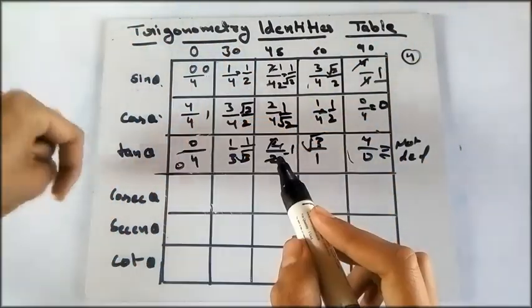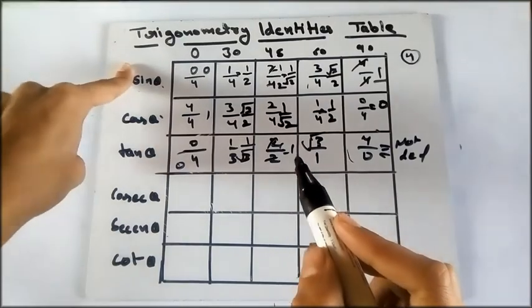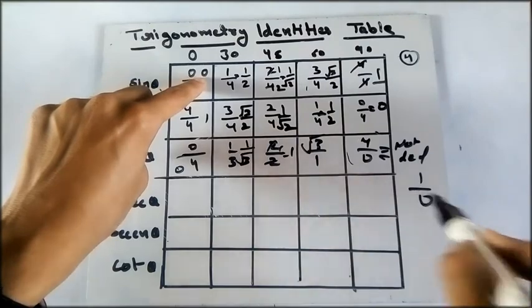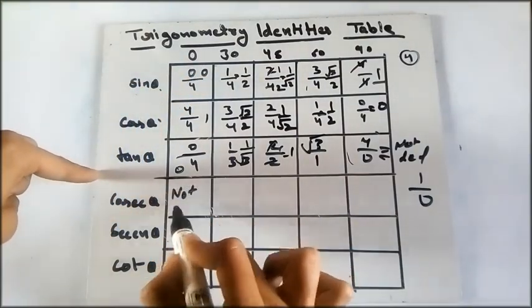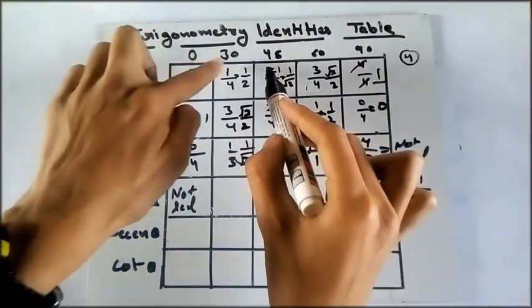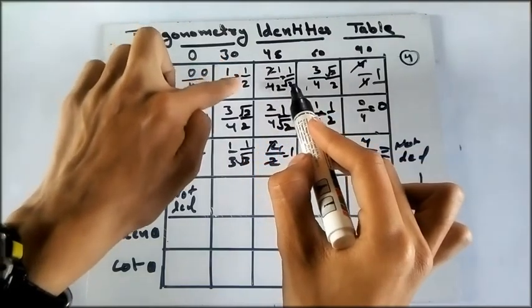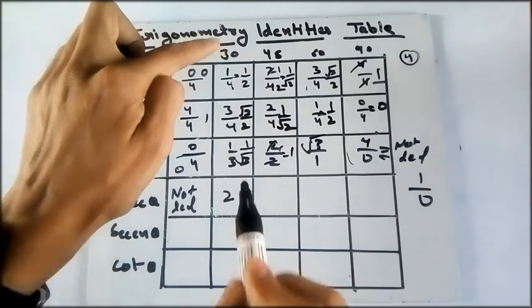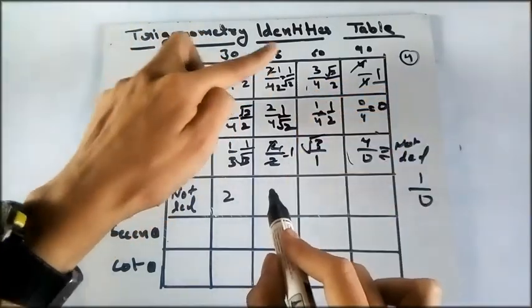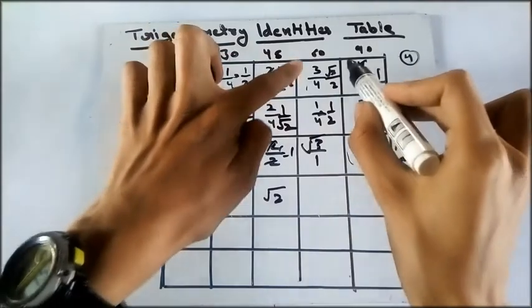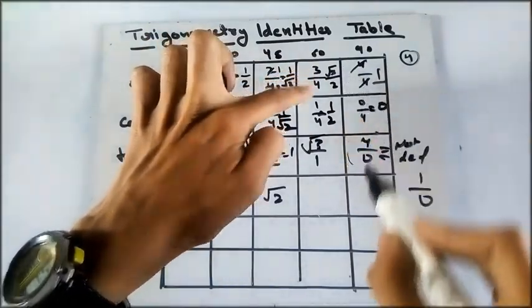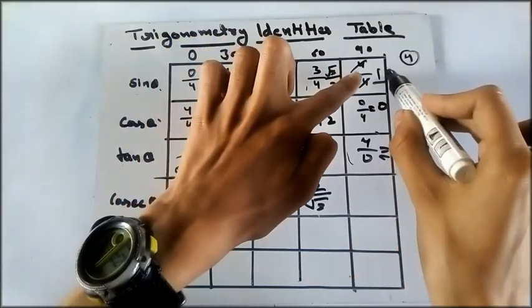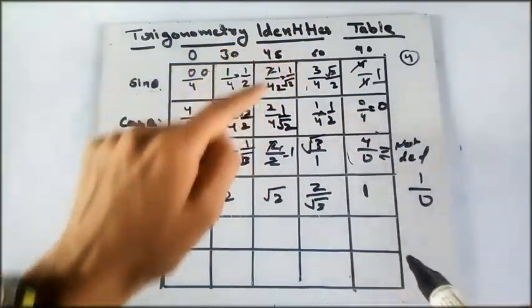Now cosec theta is the reciprocal of sine theta, so 0—and 1 upon 0 is not defined, so cosec theta in here is not defined. Here it is 2. Here it is 1 upon 2, and the reciprocal will be 2. Now next up, which is 1 upon root 2, and reciprocal is root 2. And here this is root 3 by 2, reciprocal is 2 by root 3. Now here it is 1, and 1 upon 1, that is here only 1 will come.